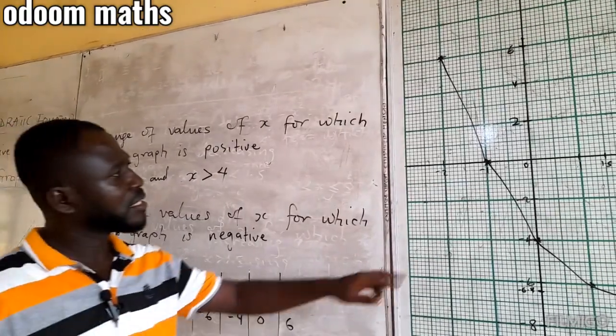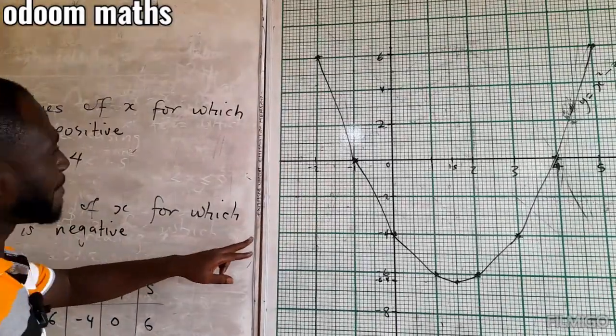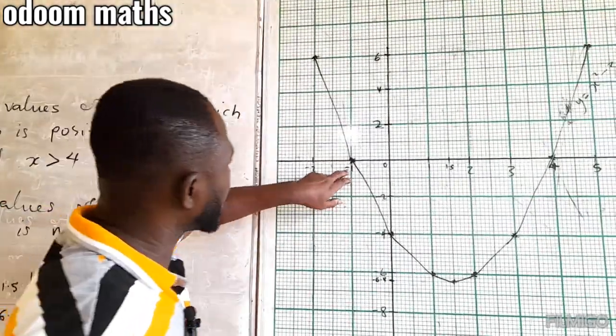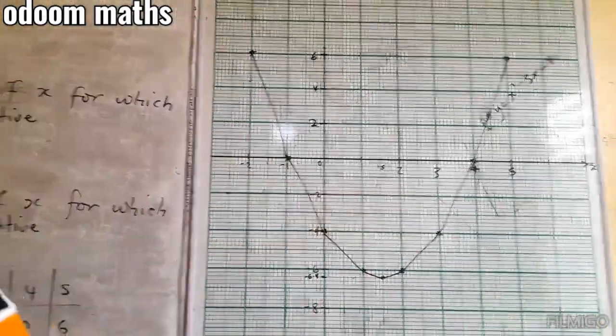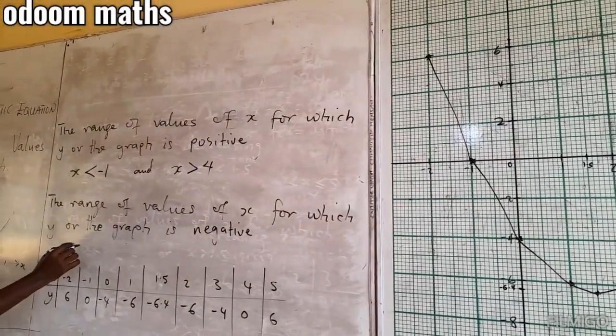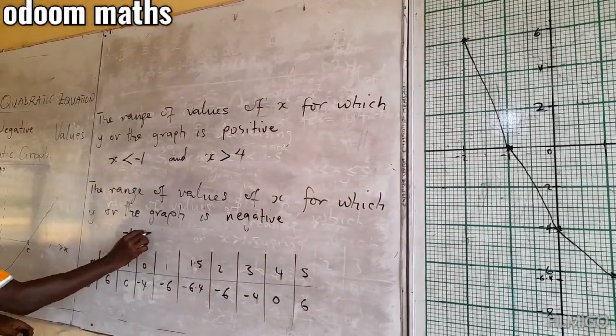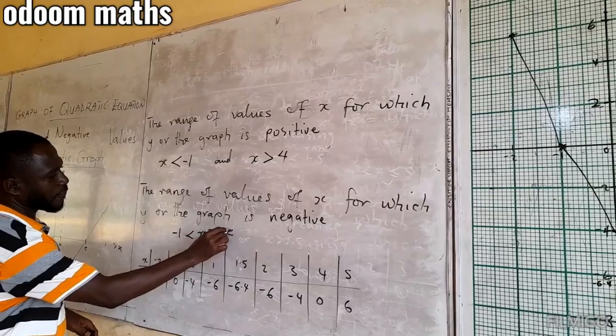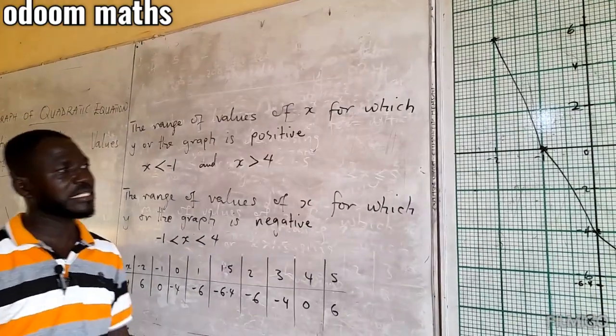Then, for the negative, we say from between negative 1 and 4. So, negative 1 less than x less than 4 becomes the answer.